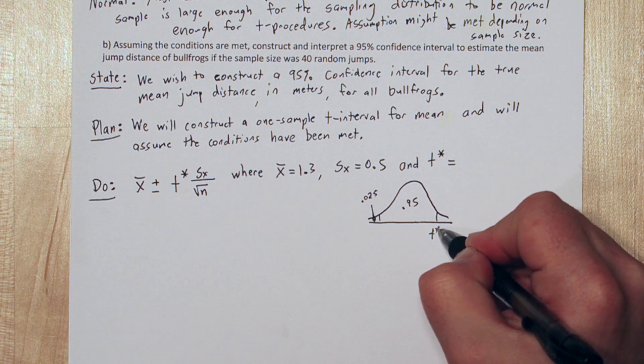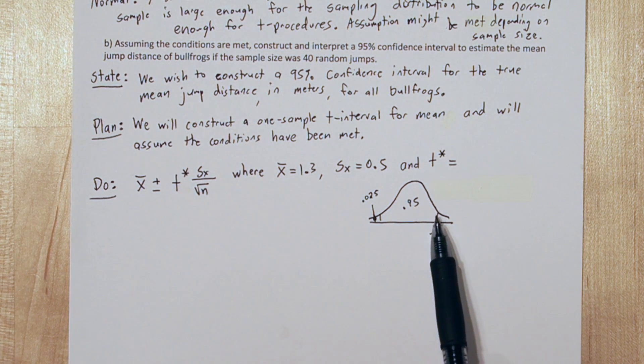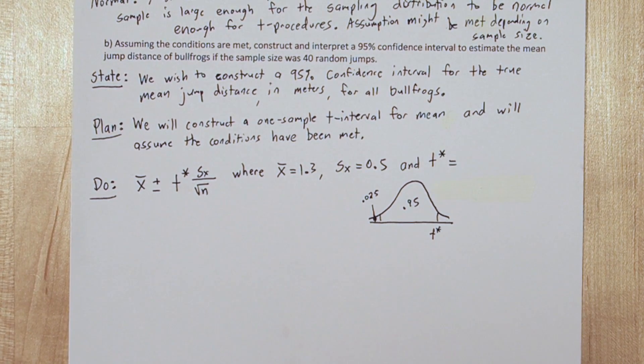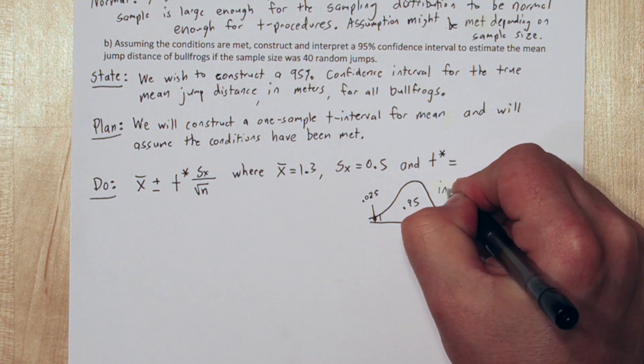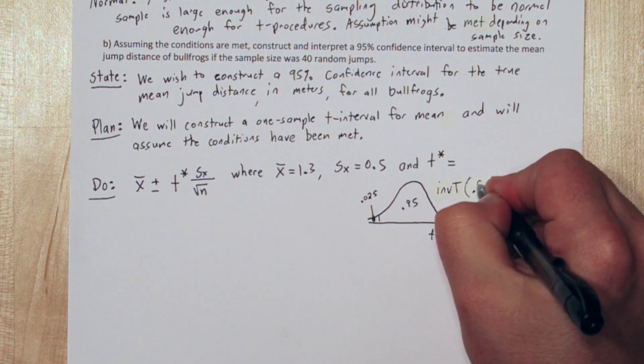But to use inverse T on the calculator we have to tell it what area is to the left of our cutoff. So our cutoff right here actually has 97.5% of the area to the left, because it includes the middle 95% plus that tail area on the left of 2.5%.